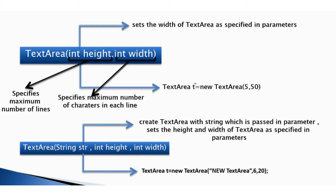Here, height is the number of lines or rows and width is the number of characters in each line. For example, five is the height and 50 is the width of the TextArea.